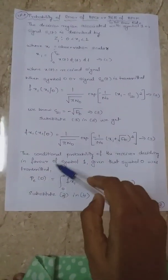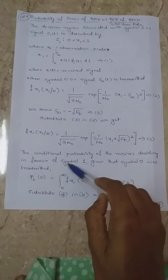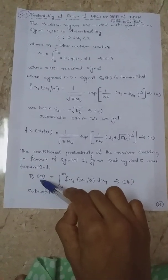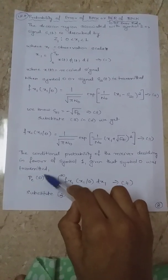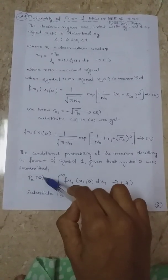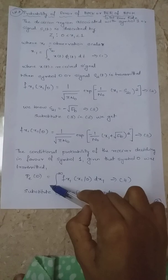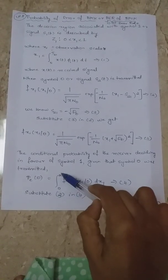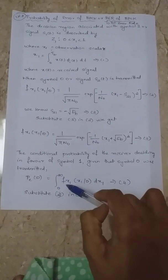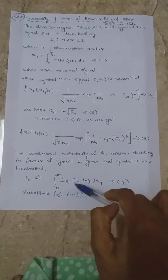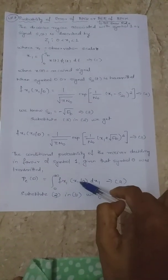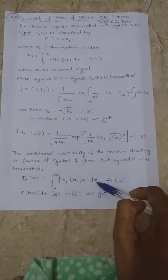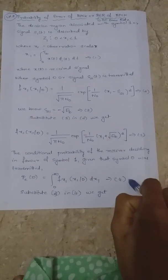The probability of BPSK for symbol 0 is given by the integral from 0 to infinity of the PDF of X1, integrated over X1 greater than 0, dX1. That is equation number 4.